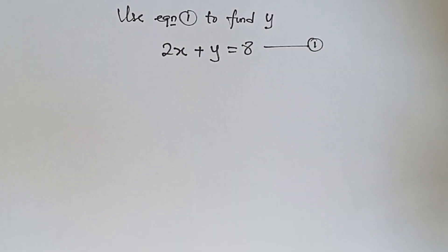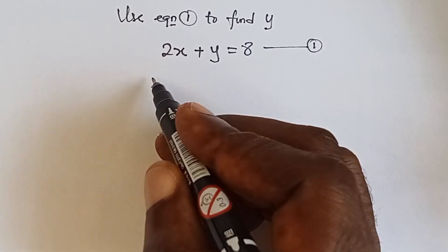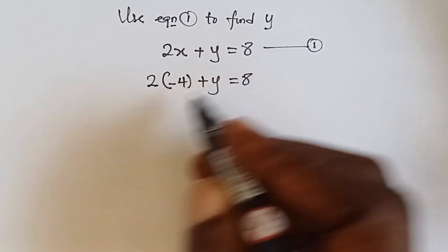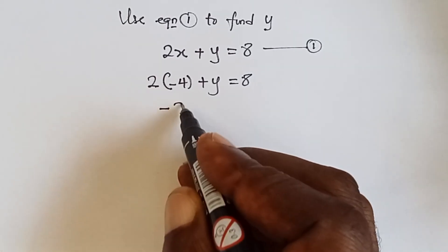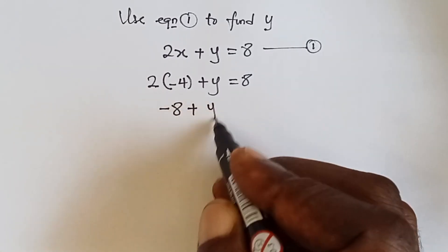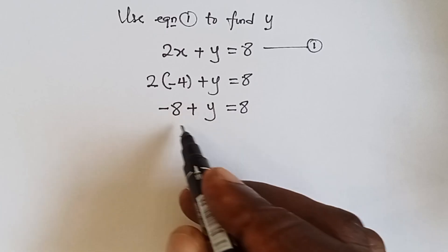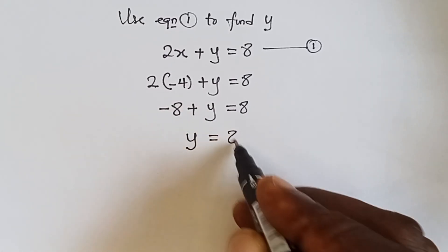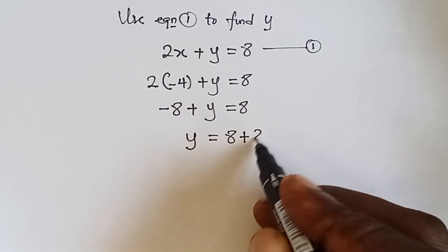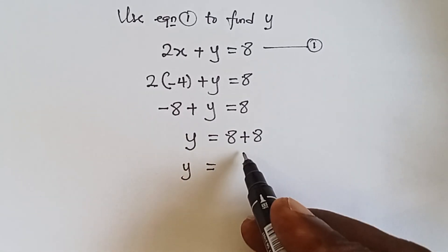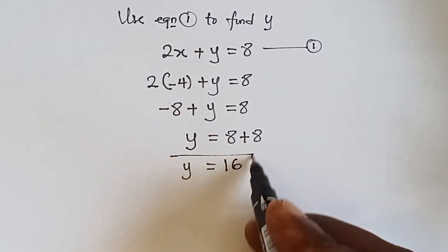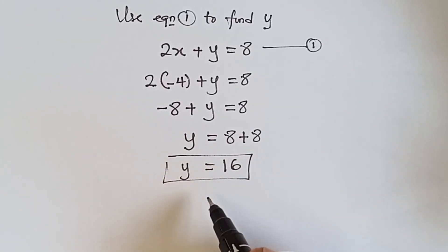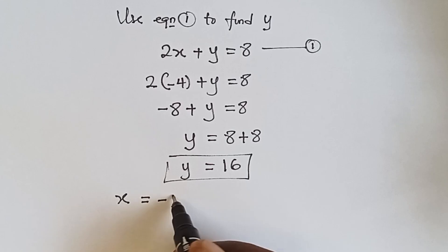We substitute for x — anywhere we see x we write minus four. So two times minus four plus y equals to eight. Two times minus four is minus eight, plus y equals to eight. We collect like terms: y equals to eight plus eight, which gives us 16. So y equals 16.